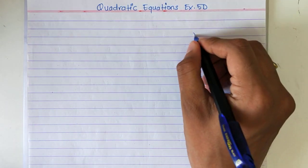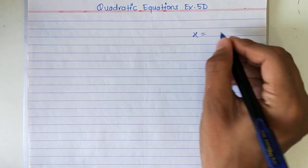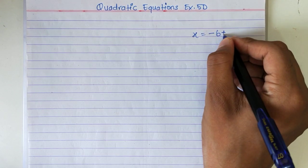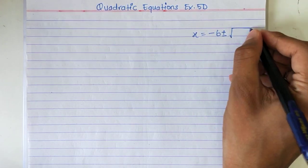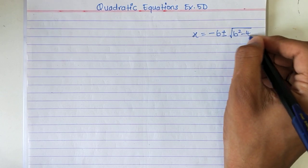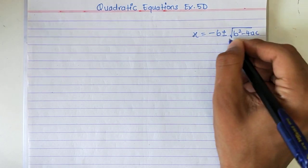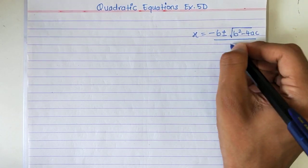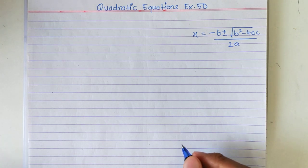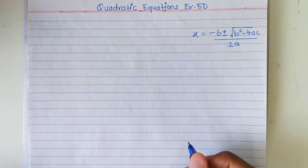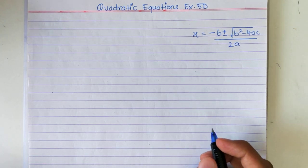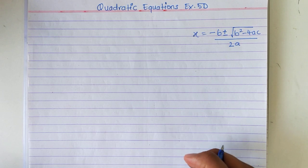The formula for x is minus b plus minus root of b squared minus 4ac upon 2a. This is the formula to be used when splitting the middle term is not possible.